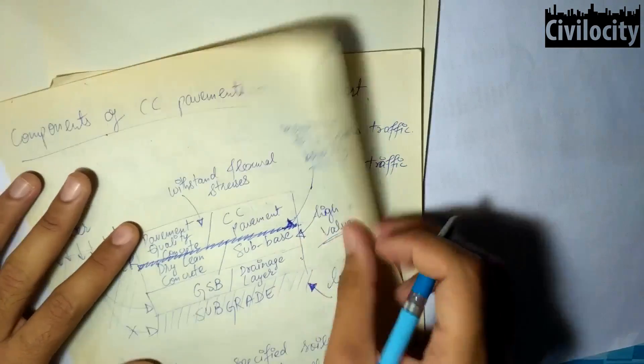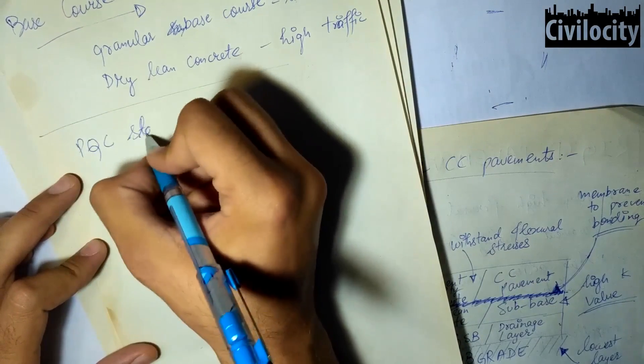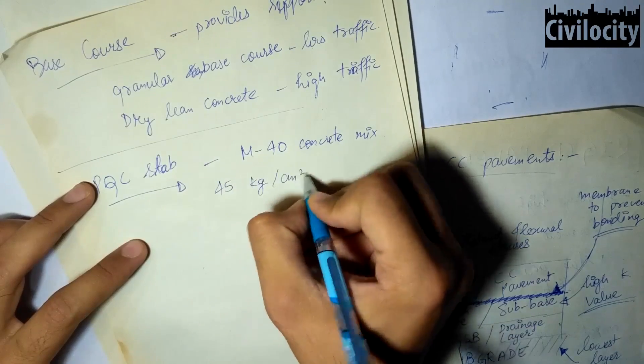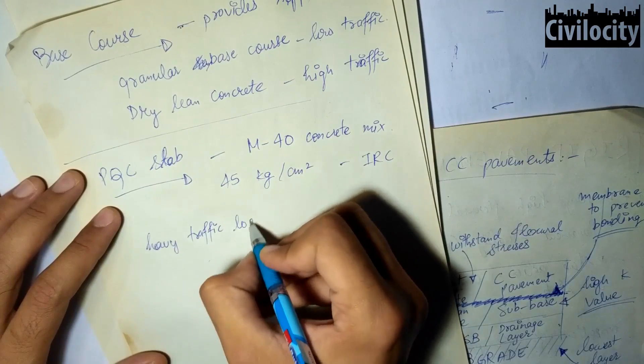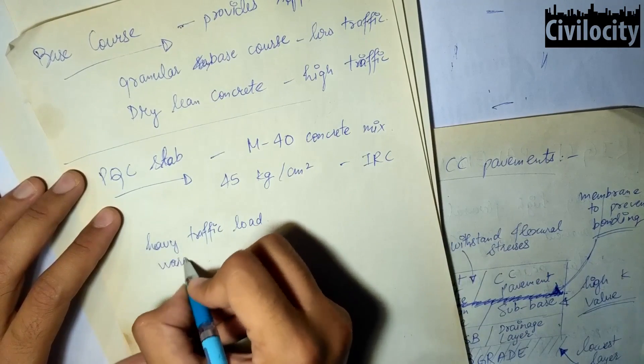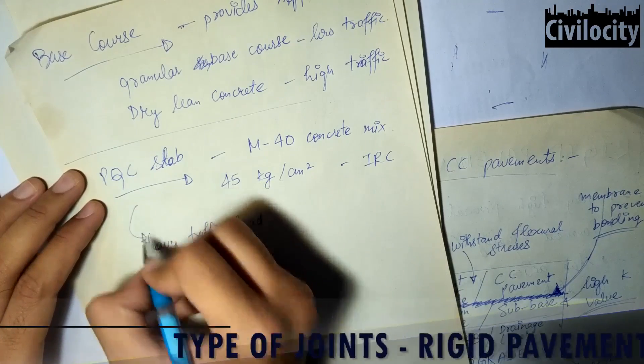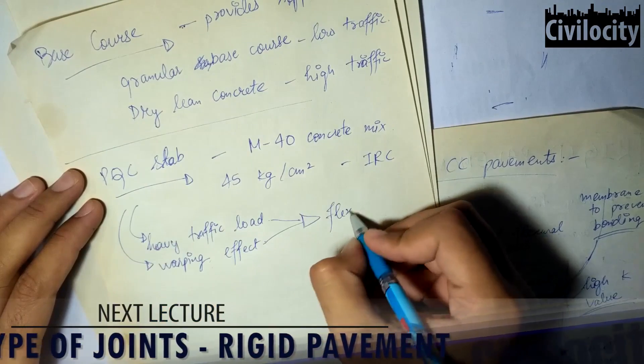Now let's talk about the pavement quality concrete slab. In pavement quality concrete slab M40 cement concrete mix with a minimum flexural strength of 45 kilogram per centimeter square is recommended by IRC. Generally flexural stresses are caused by heavy traffic loads and warping effects due to daily variation in temperature during the 24-hour cycle.